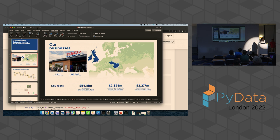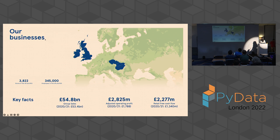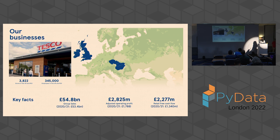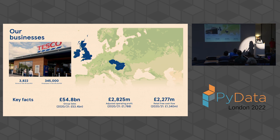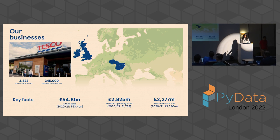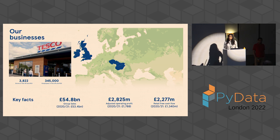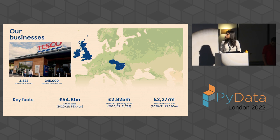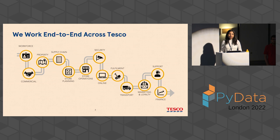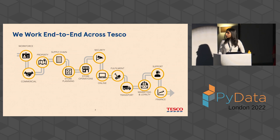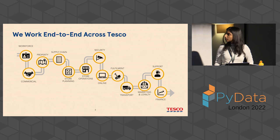A little bit about Tesco. We are a retailer in the United Kingdom and Central Europe and we are the largest supermarket in the United Kingdom. We have over 3,500 stores and over 300,000 employees. What this means for us as a data science team is that there are large volumes of a variety of data that we have access to, and we're trying to use that to help the business. The data science team is quite big and well-established, with a diverse portfolio across multiple locations.